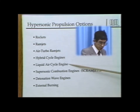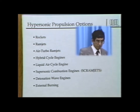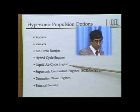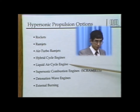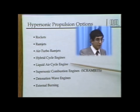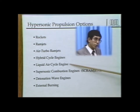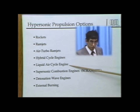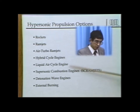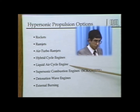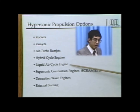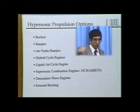One warning about the liquid air cycle engine: the maximum exhaust velocity is limited by the rocket engine incorporated into the system — about 4,500 meters per second, roughly half orbital speed. So liquid air cycle engines alone are probably not sufficient to reach orbital speed unless additional strategies are employed, such as storing mass on the way up to orbit and using it later to increase thrust.